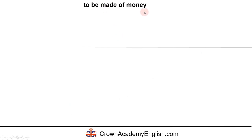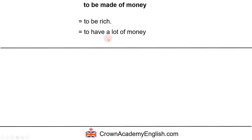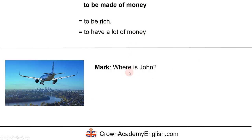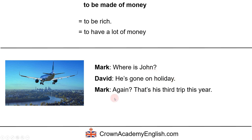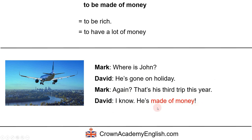The next expression is 'to be made of money.' If someone is made of money, it means they are very rich and have a lot of money. For example: Mark asks where John is, and David replies 'He's gone on holiday again — that's his third trip this year.' Mark says 'I know, he's made of money,' meaning John is very rich.